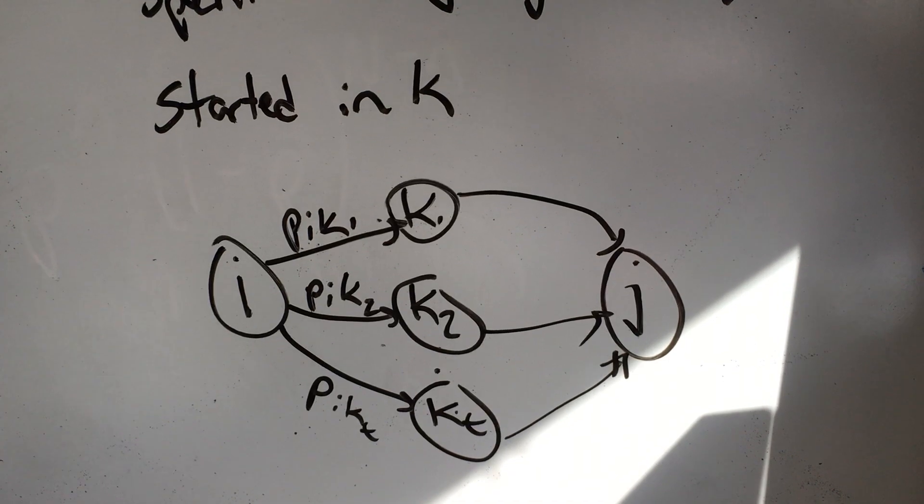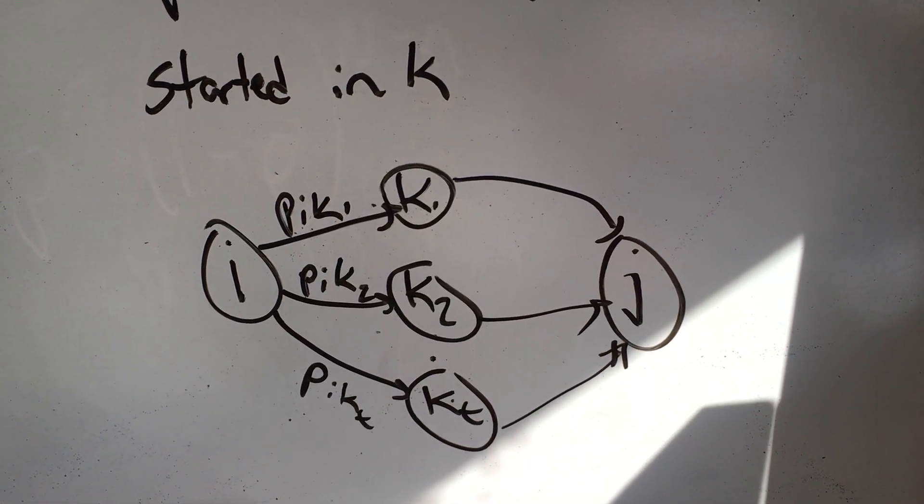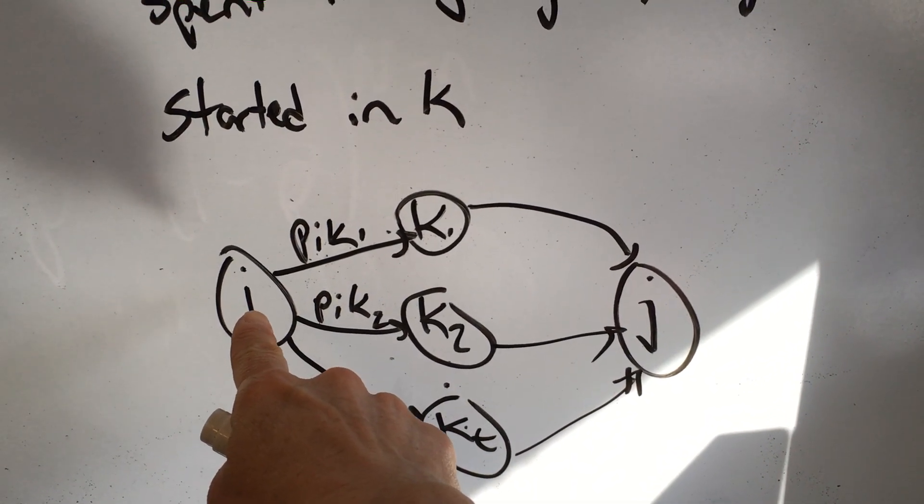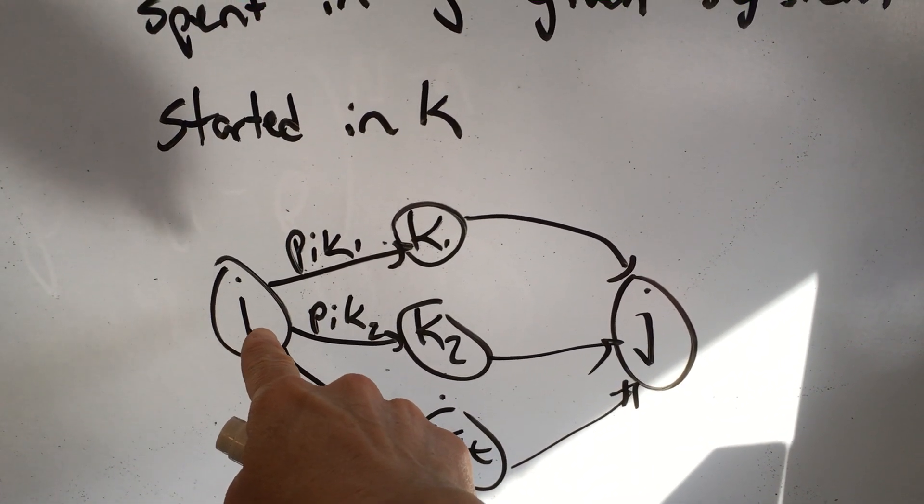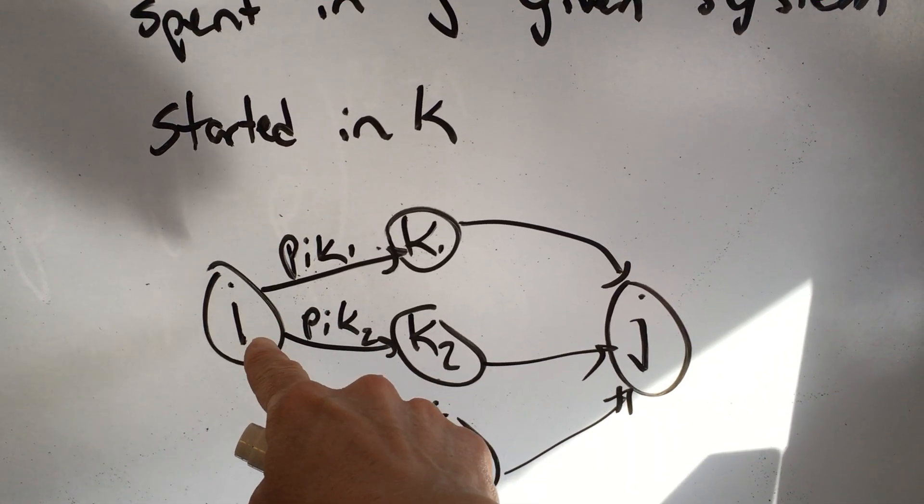Here's an example, you can think of it this way. So let's say I and all of the K's and J are all transient, and I start in state I. To calculate my equation, first of all, I'm going to add one, that's my delta IJ, if I and J are the same.